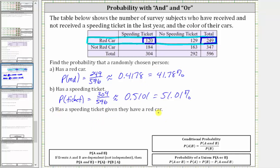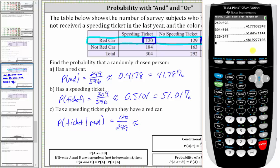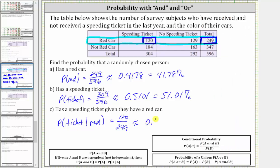This is called conditional probability, which we indicate as the probability of a ticket given a red car. Which again we know is equal to 120 divided by 249, which to four decimal places is approximately 0.4819, which is 48.19%.